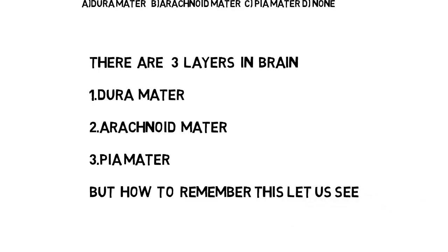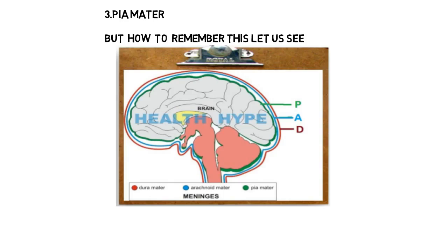But how to remember these layers and their order? Let us see the trick. Here you can see the image of the brain covered with 3 layers. The inner layer is in green color — its name is Piamater, denoted by P. The middle layer is in blue color — its name is Arachnoid Matter, denoted by A. The outer layer is in red color — its name is Duramater, denoted by D.